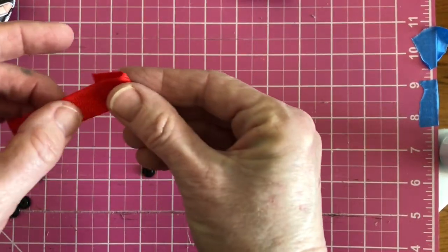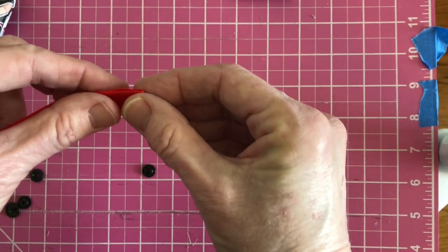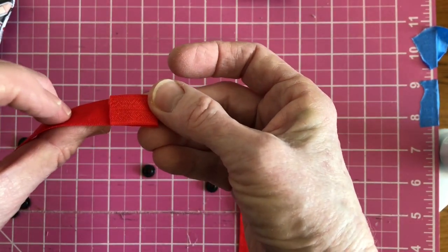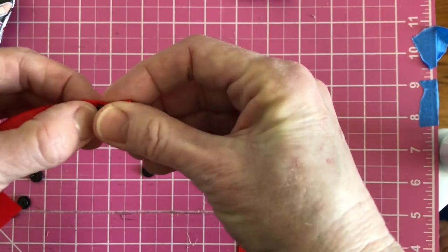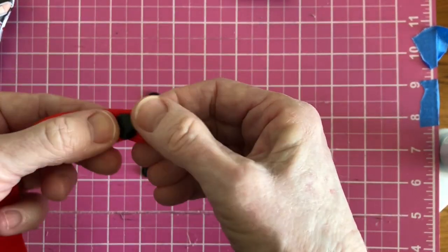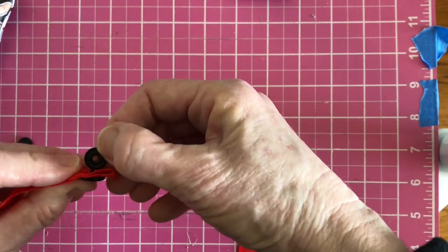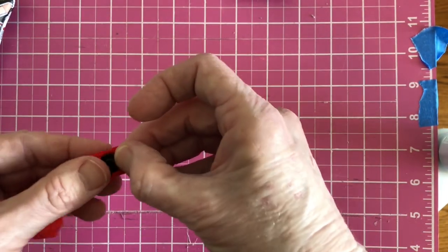Fold the cut edge of the strap to the inside about five eighths to three quarter inch. Place the snap set base on the outside, then turn the strap over and place the male or female snap piece on the inside.